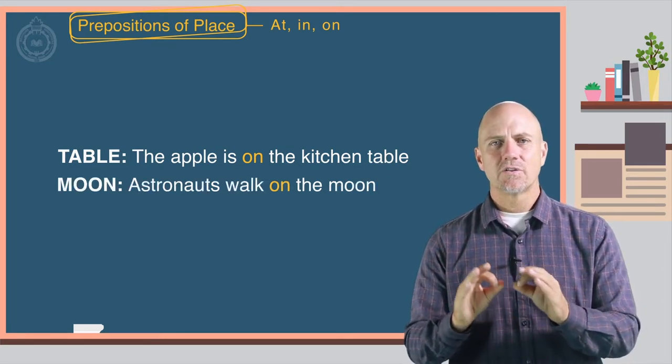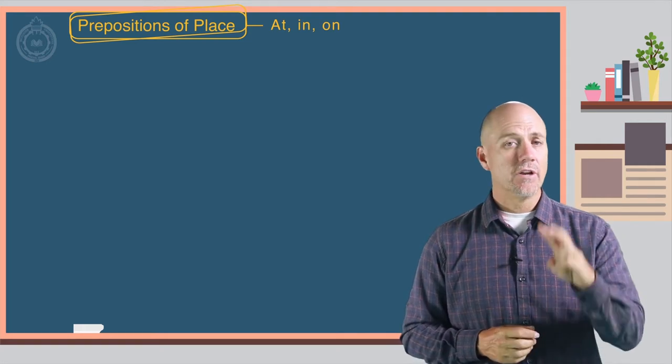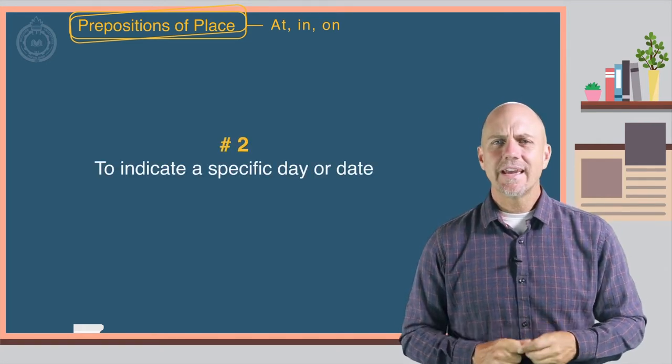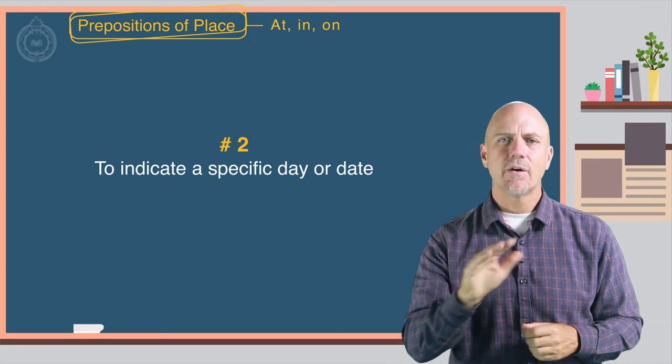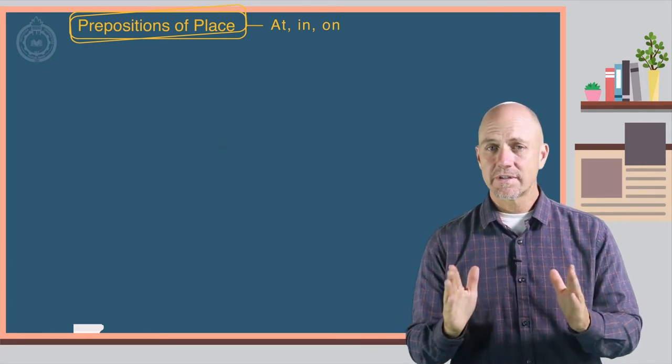Here astronauts walk on the moon. Number two, to indicate a specific day or date.